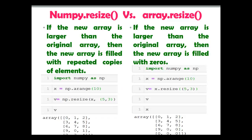As I said, if the new array is larger than the original array, then the new array is filled with the repeated copies of the elements if you are using numpy.resize — that you can see in the example on the left side. I have imported numpy as np, created a 1D array with the arrange function, then np.resize with x and 5 cross 3. You can see elements filled with 1, 0, 0 — repeated copies of the elements from the array.